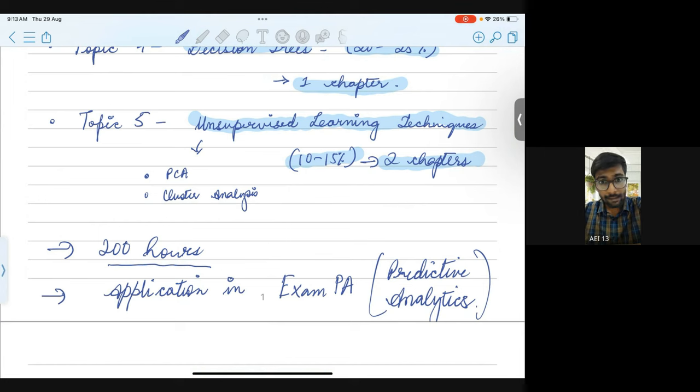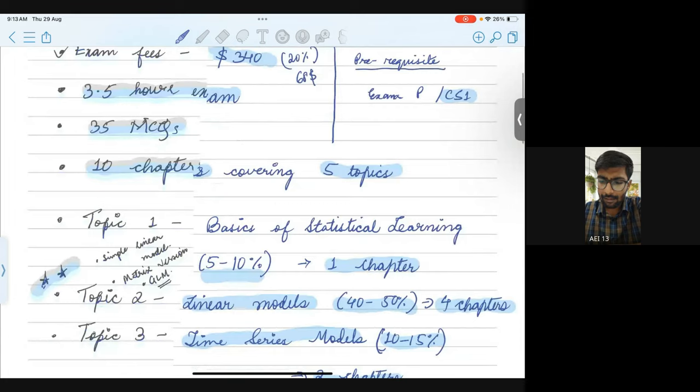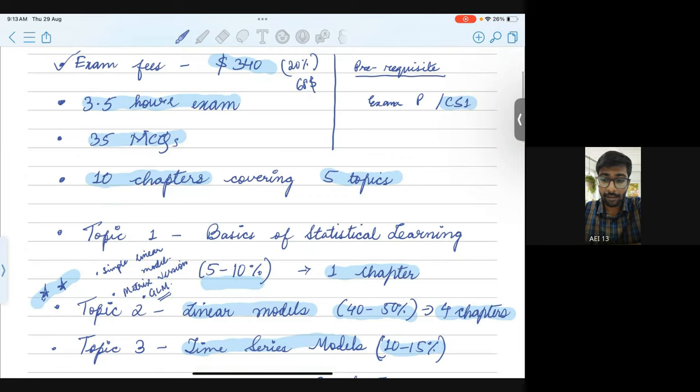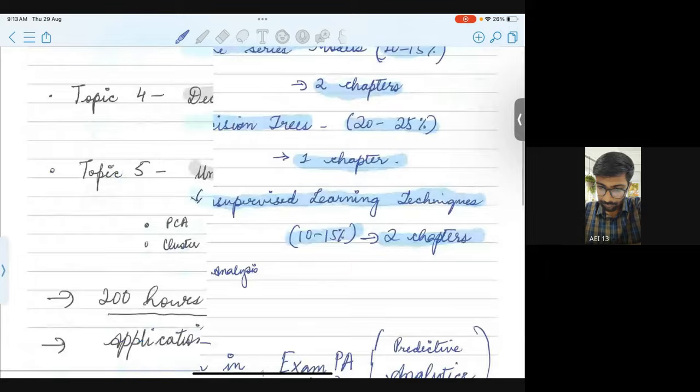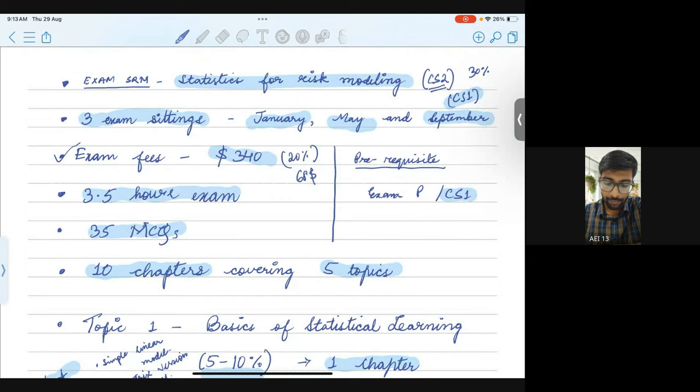But here, the application of this particular subject will appear in a different exam called exam PA, which is predictive analytics. Let me rewrite. The exam is predictive analytics, which is mostly based on R. It's a different exam. Exam SRM won't consist of any of the practical parts. But they do mention in some places that a particular topic could be very important in R. They just give a heads up there that that particular topic would be again studied in this exam PA. That's all about SRM exam that I wanted to share with you. Thank you very much.